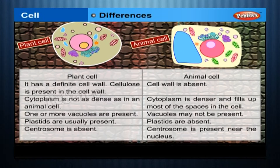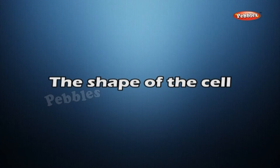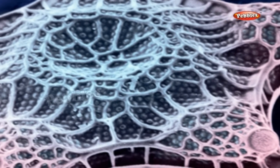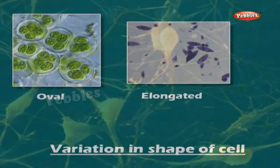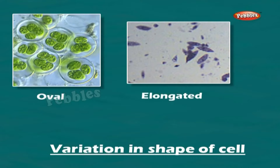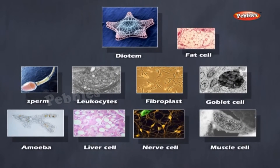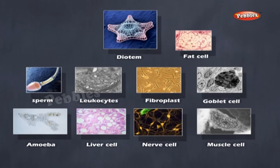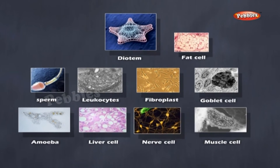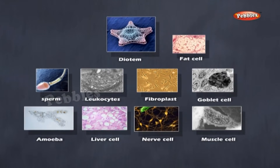Differences between a plant cell and an animal cell are tabulated on the screen. The shapes of cells also show great variations. Some cells are oval while others are elongated. The cell of amoeba is irregular in shape. Shapes of various plant and animal cells are shown in the figure. Generally, the shape of the cell is correlated to its function.